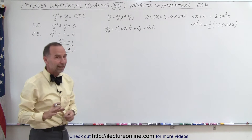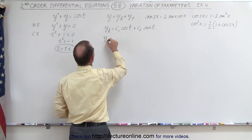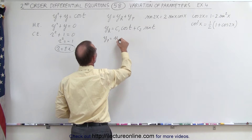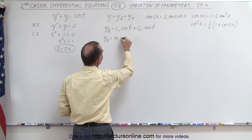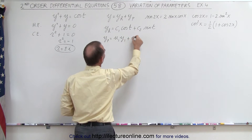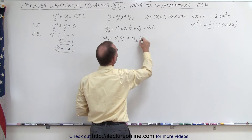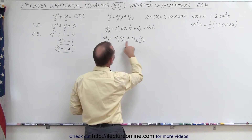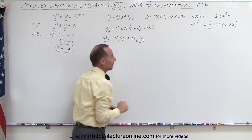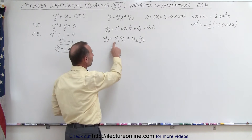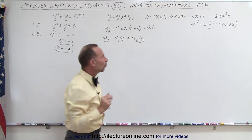We realize that the particular part of the solution is going to be equal to some unknown function u1 times y1 plus another unknown function u2 times y2. Of course, y1 and y2 are cosine of t and sine of t. The objective is to find u1 and u2. To do that, we're going to need the Wronskian.